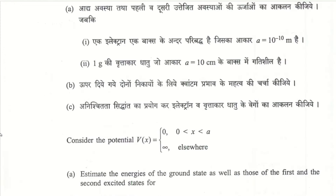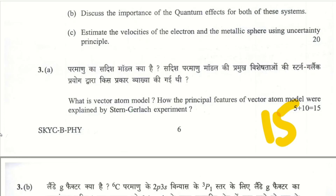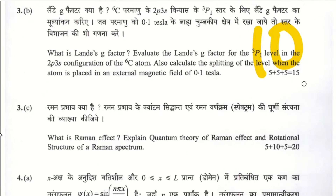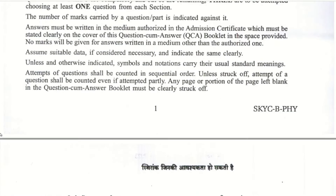We skip Question 2 and move directly to Question 3. Part A — vector atom model, principal features explained by Stern-Gerlach experiment — theoretical, 15 marks. Part B — Lande g-factor definition and calculation for 3P1 level — 10 marks out of 15. Part C — Raman effect definition and quantum theory explanation — 20 marks. Total for Question 3: 45 marks.